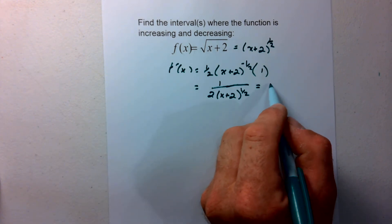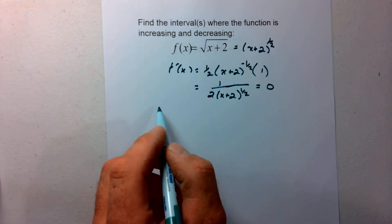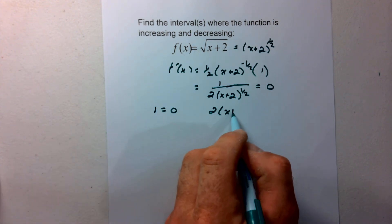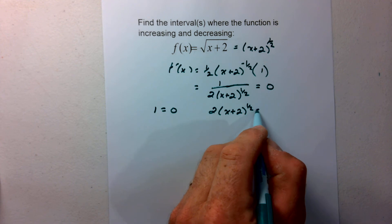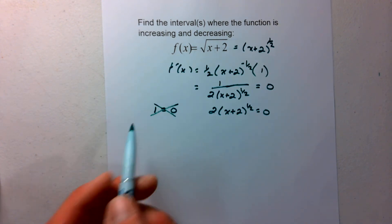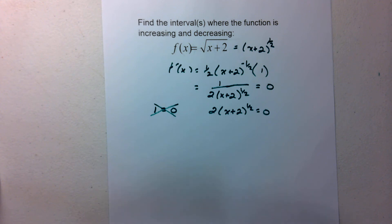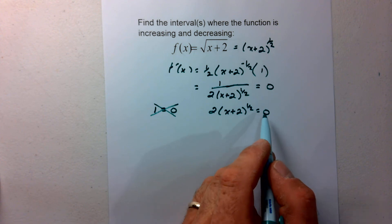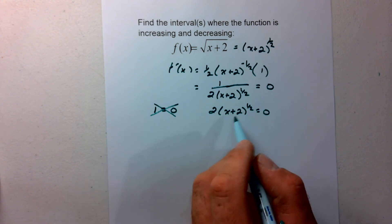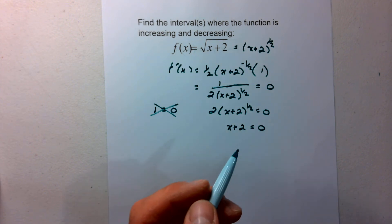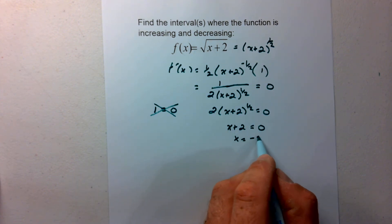Setting this equal to zero: the numerator 1 equals zero doesn't make sense, so we eliminate that. For the denominator, solving for x: dividing by 2 and squaring both sides gives x plus 2 equals 0, so x equals negative 2.